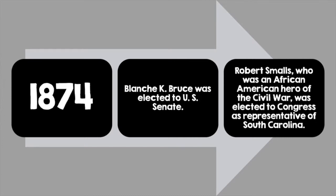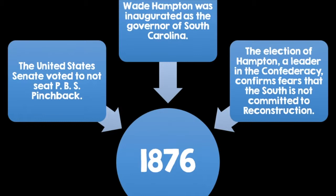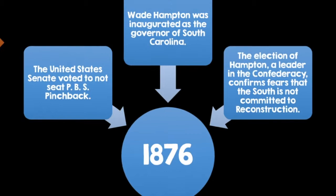In 1876, the United States Senate voted to not seat PBS Pinchback based on the color of his skin. Wade Hampton was inaugurated as governor of South Carolina. The election of Hampton, who was a leader of the Confederacy, confirmed fears that the South was not committed to Reconstruction.